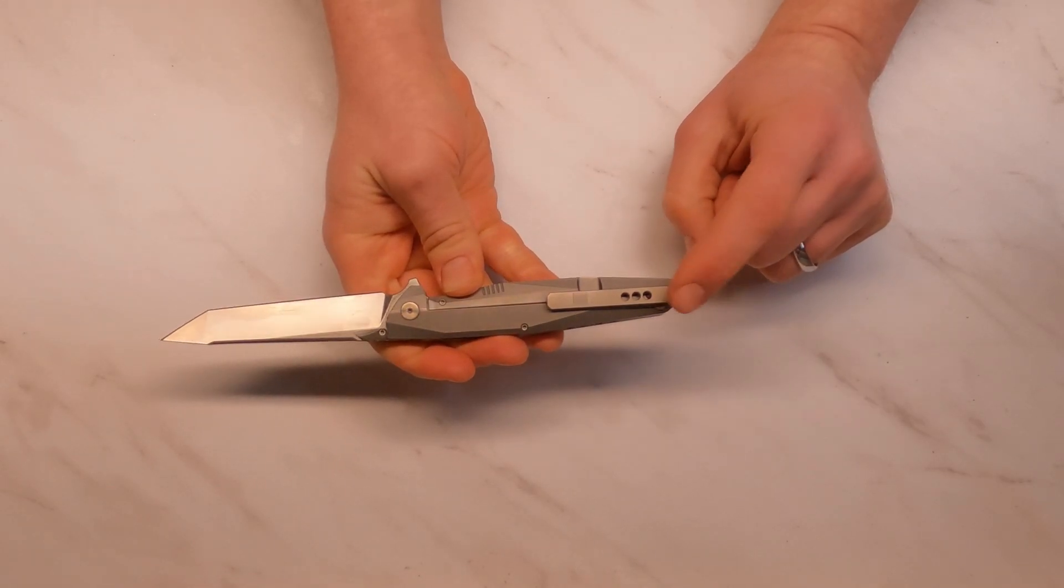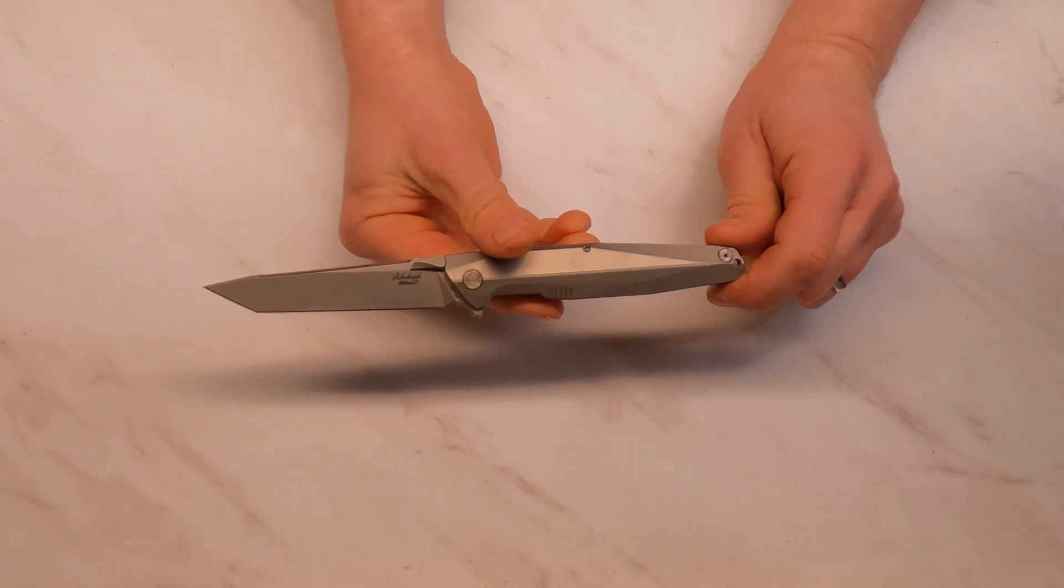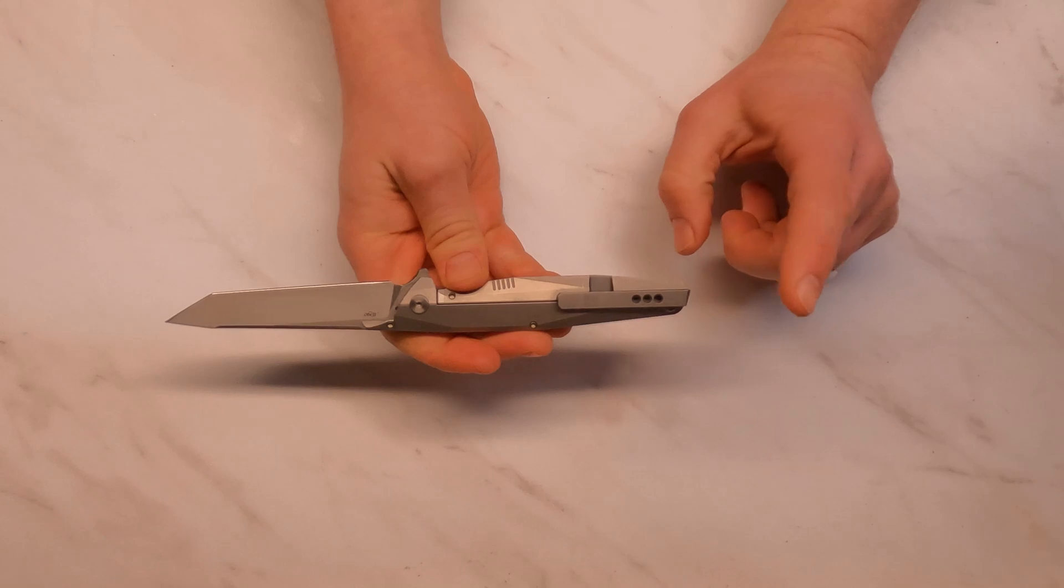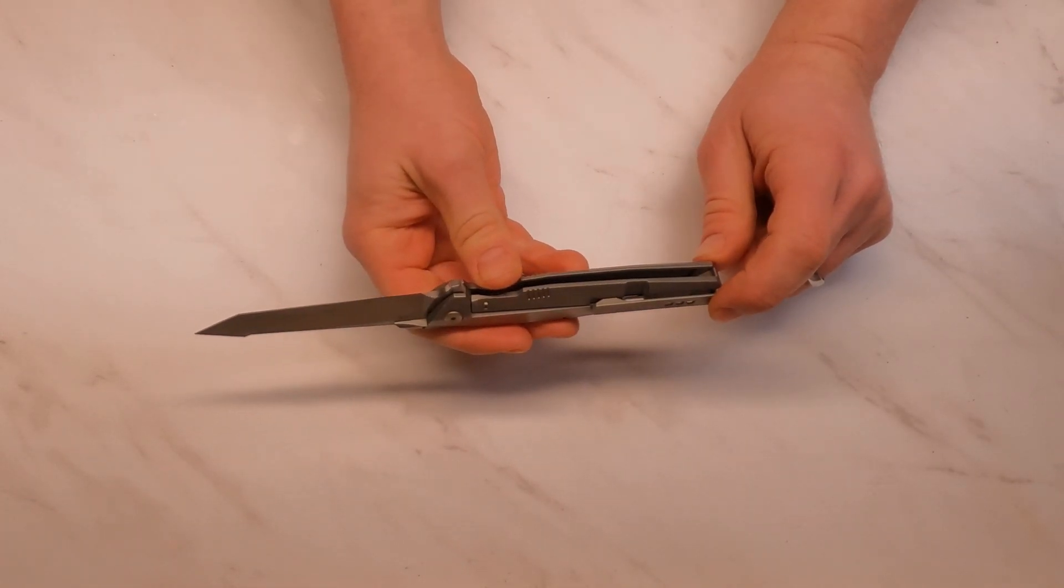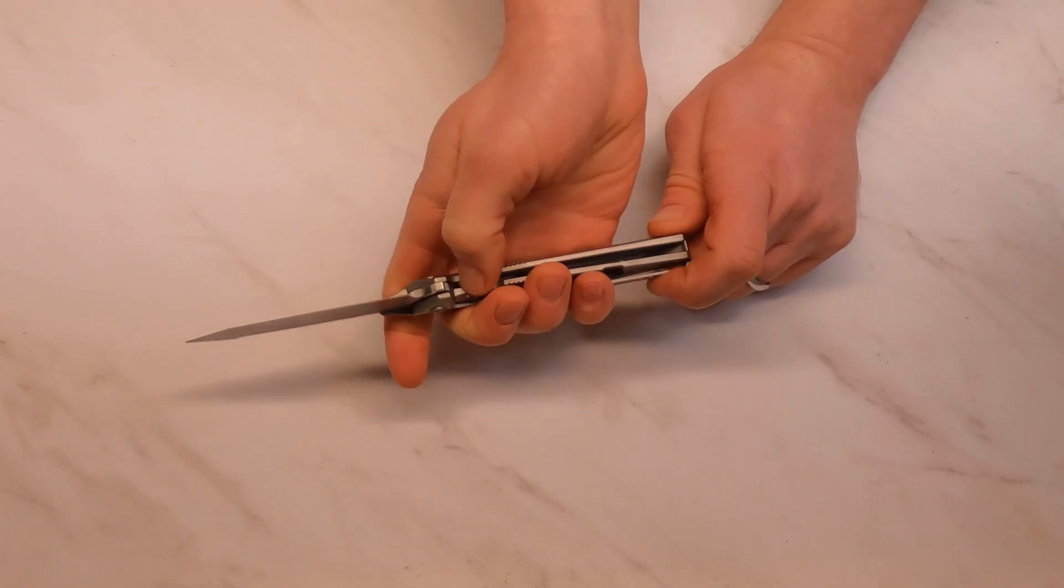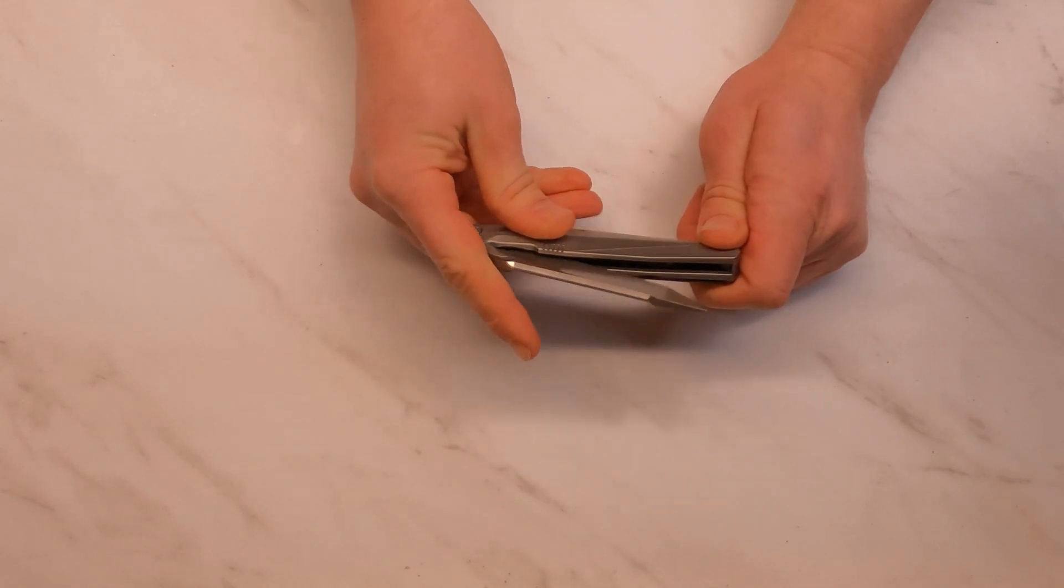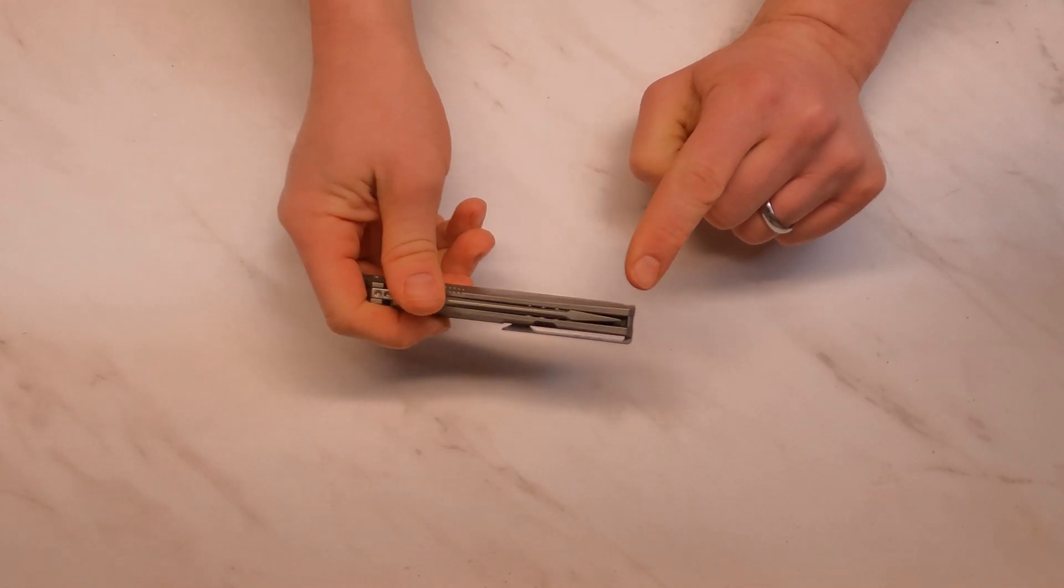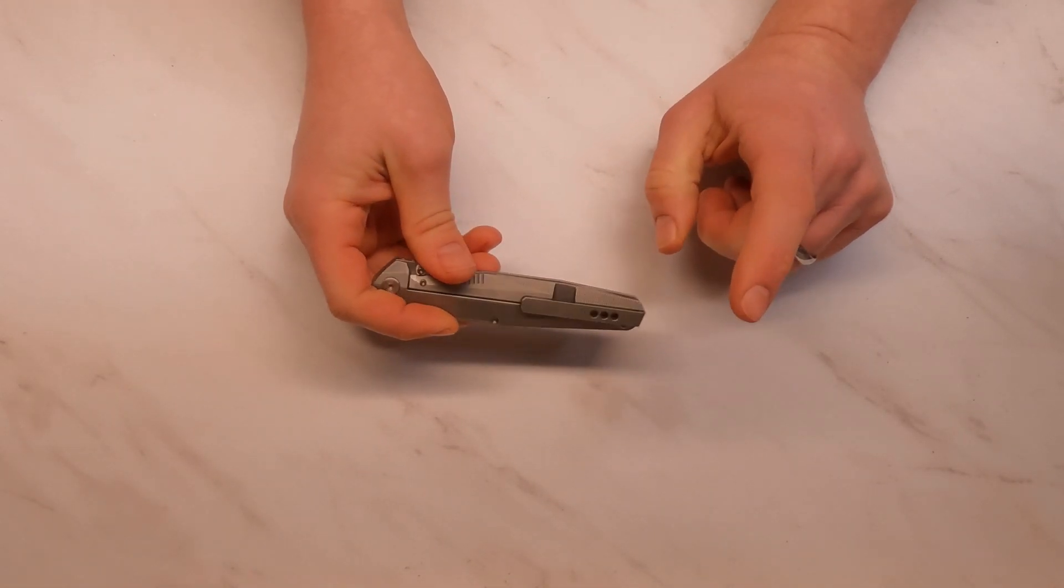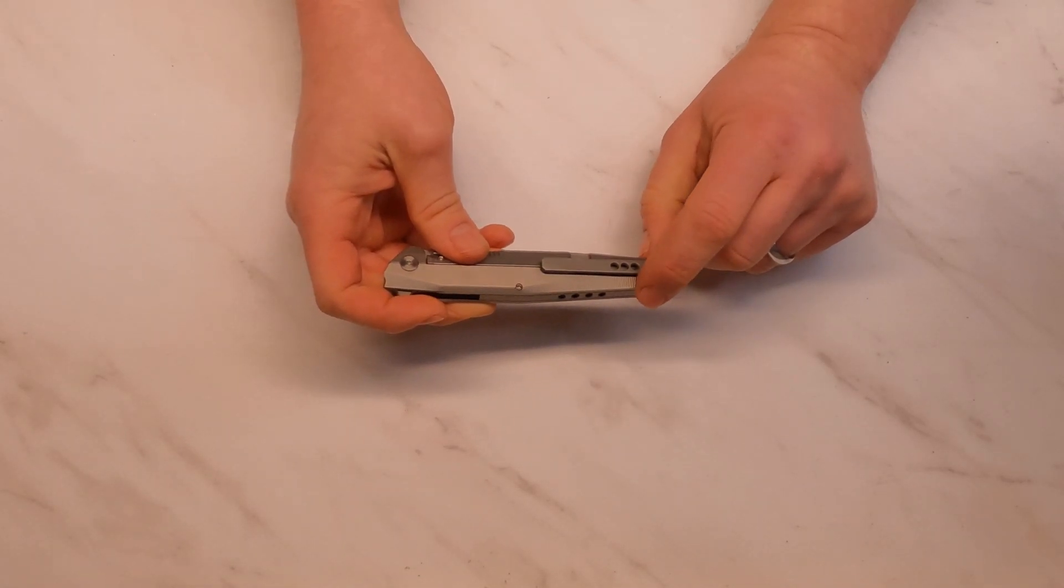The pocket clip is worth noting because this cannot be changed from side to side on this knife. It's right-hand tip-up carry only. That's the only option you get on this one. The other thing about the pocket clip is that it's attached from the inside, so you have to disassemble the knife in order to tighten the pocket clip if it does loosen.